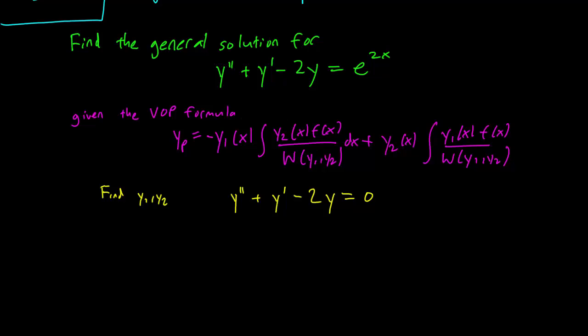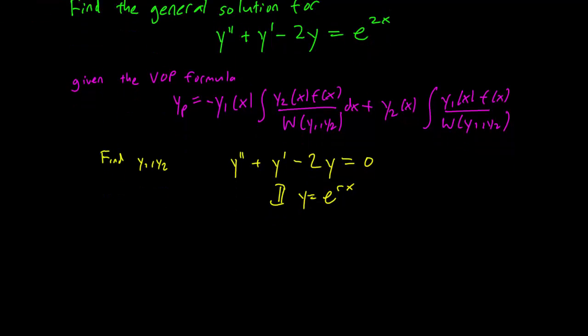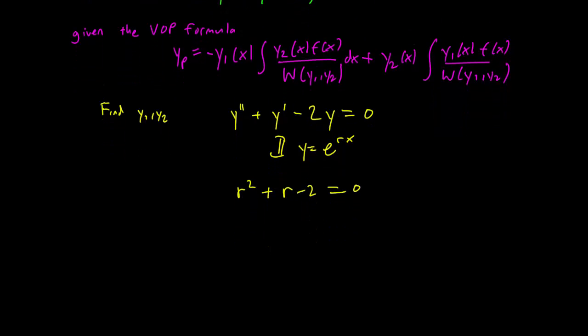We make our usual substitution. And this gives us our characteristic polynomial: r² + r - 2 = 0. And you can use the quadratic formula to determine that you have (-1 ± √(1+8)) / 2. So this is either going to be 1 or it's going to be minus 2.